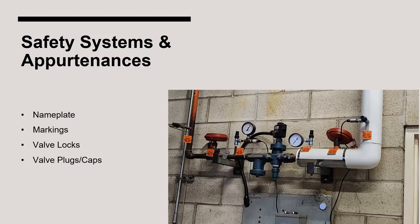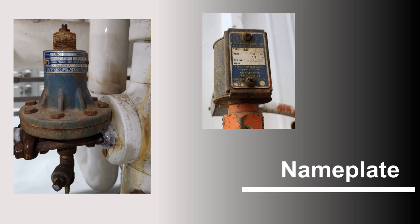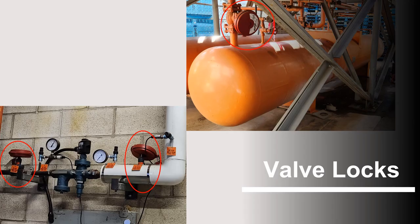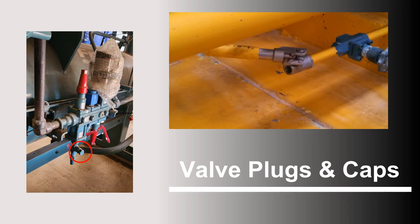We will review nameplates, markings, locks, plugs, and caps as they relate to refrigeration valves. Valves have either adhesive or metal nameplates fastened by welds or rivets. Valve bodies are required to be marked with the manufacturer's name or symbol, direction of flow if applicable, model number, size, and range limits. IIAR Standard 3 allows for size and range limit markings to be omitted due to space restrictions. Valve locks are used to secure valves in an open or closed position, preventing unauthorized personnel from changing the setting. Plugs and caps are used to mechanically seal a section of pipe or valve opening shut.